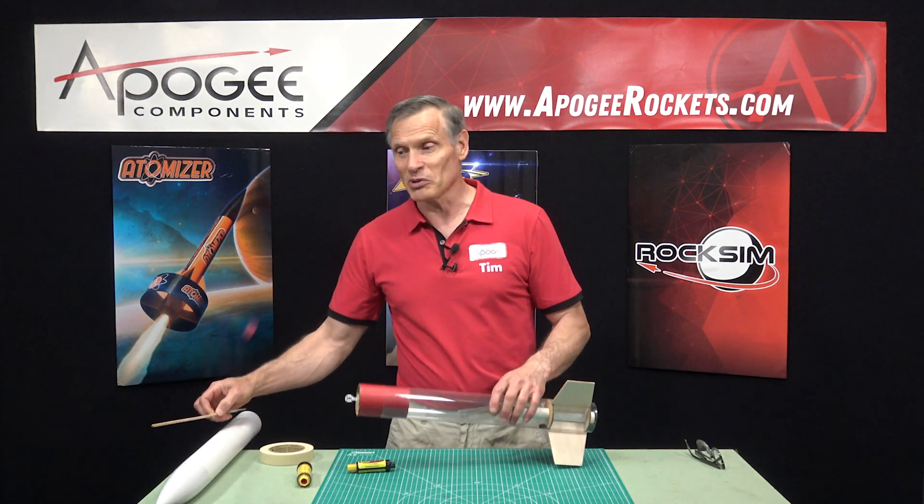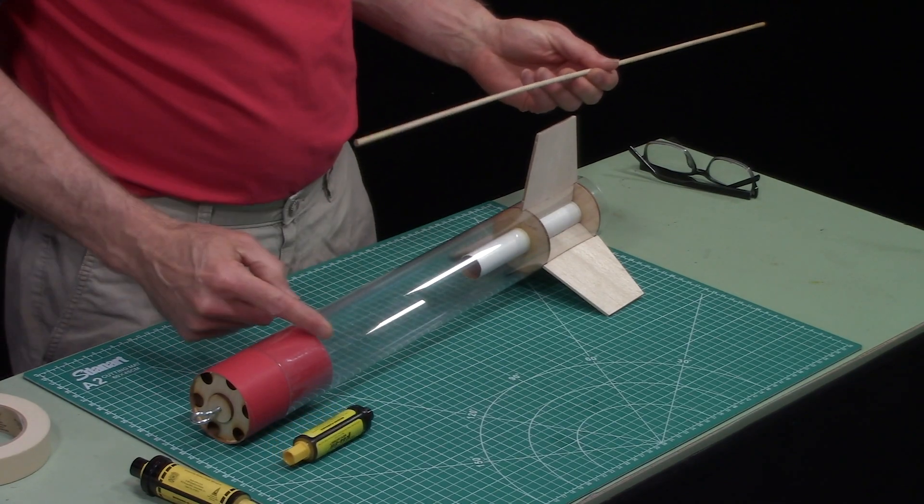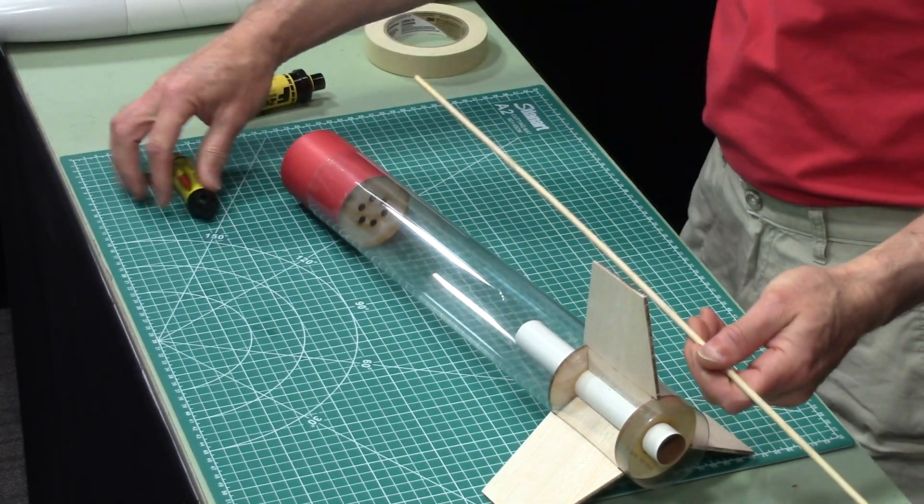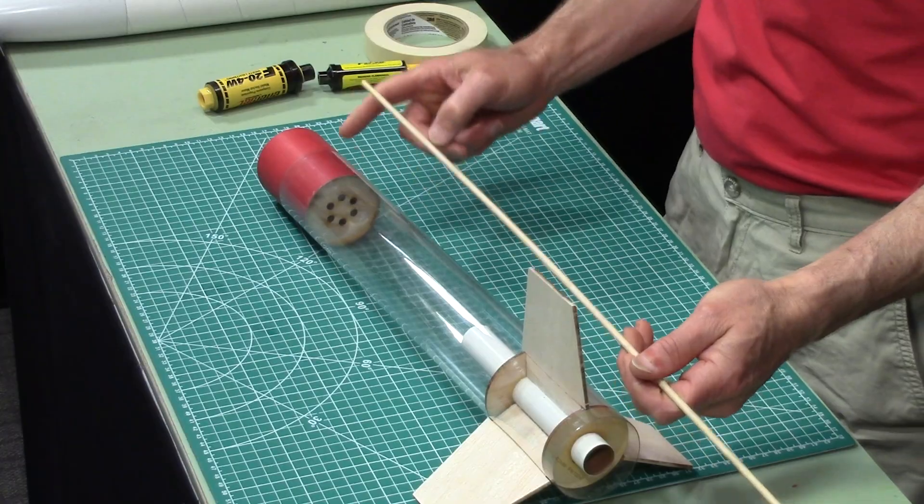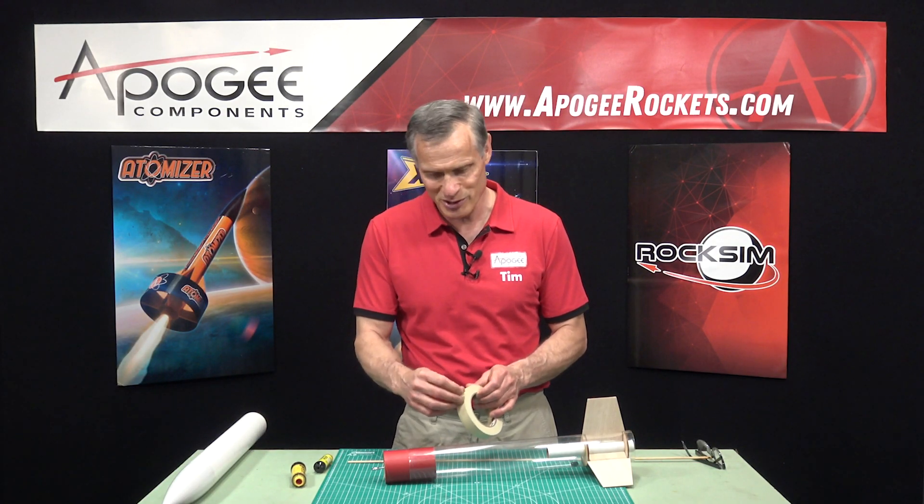So here's the simple little trick. It involves a wooden dowel that's long enough to reach all the way to the ejection baffle. And then some tape. And you know where this is going.